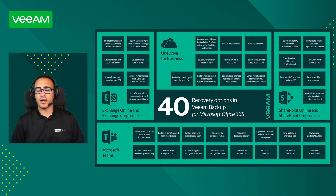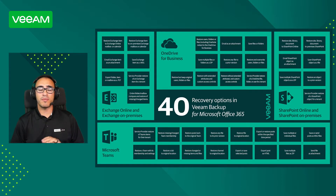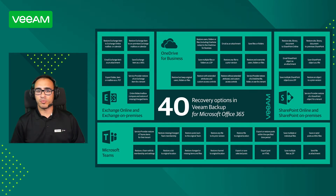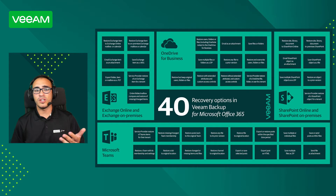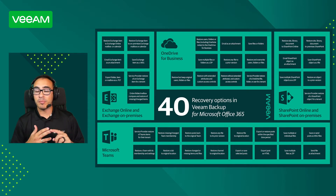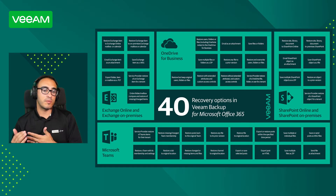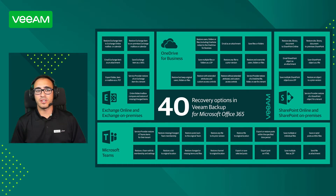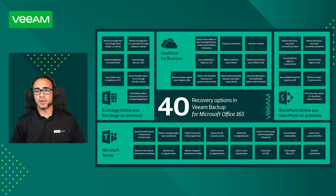We actually have a really nice image with 40 recovery options in Veeam Backup for Microsoft Office 365. We probably don't have enough time to cover all 40 different scenarios, but you can find this image on our website. You can see we have different sections — Exchange Online and Exchange On-Premises — with options to restore exchange items like calendar appointments, emails, folders back into production or into a different user, or save as a .PST.